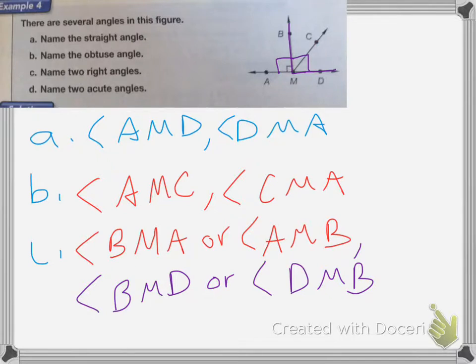The last question is name two acute angles. That means they're smaller than 90 degrees. So the first acute angle is going to be CMD. And the other one is going to be BMC. Because those two angles together make 90 degrees. So that means they have to be smaller than that. So for D, angle DMC and angle CMB. And again, you can write those in either order.